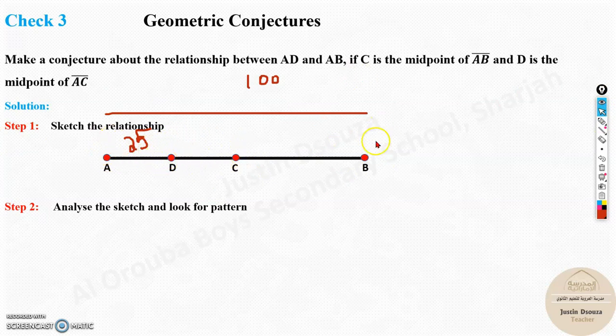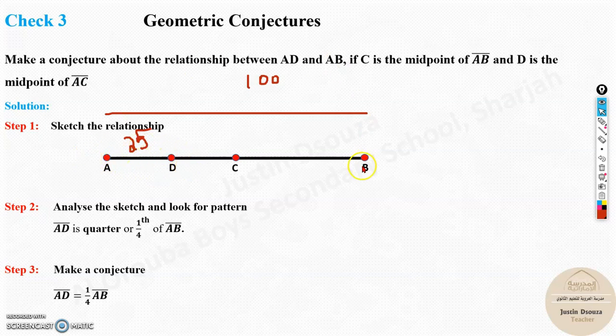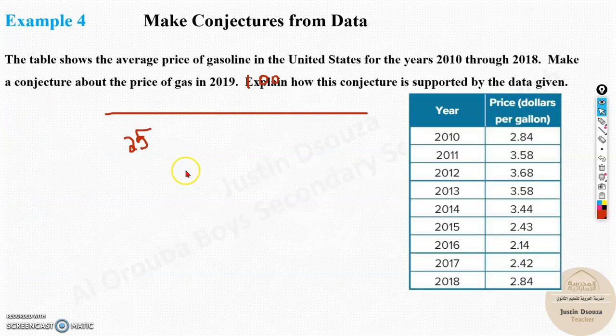The relationship between AD and AB will always be 1 fourth or quarter. That is the conjecture. AD equals 1 fourth of AB. Let's move on to the next type of problem. Example 4.